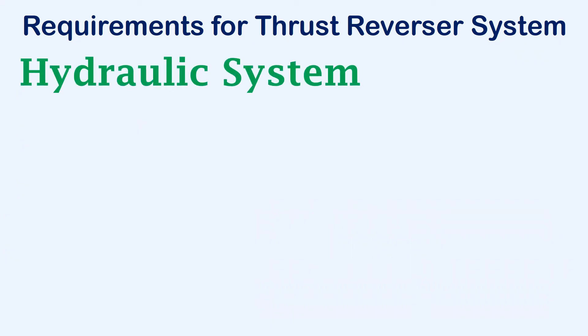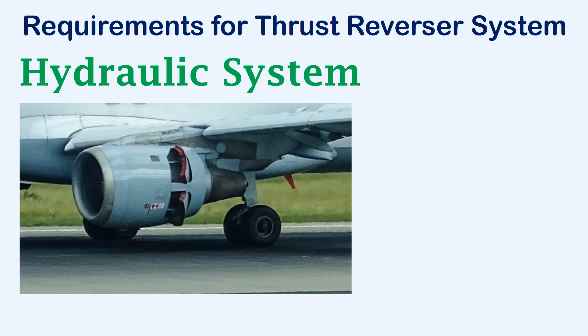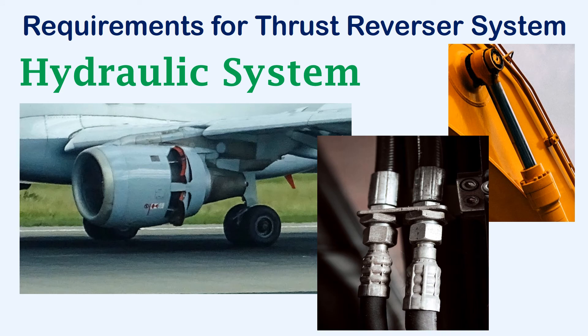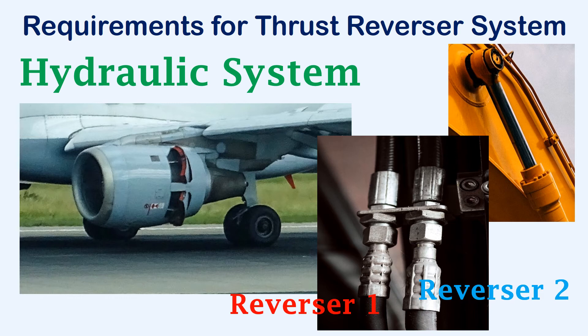The thrust reverser deployment is achieved with the help of hydraulic power. The hydraulic system installed on the aircraft provides the required hydraulic pressure for the thrust reverser actuator. If the aircraft has more than one hydraulic system, then each reverser would be provided with separate hydraulic power. This is because in case of failure of one of the hydraulic systems, only one reverser will be affected.